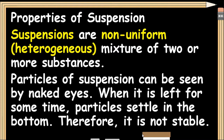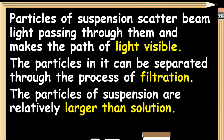Properties of suspension: Suspensions are non-uniform or heterogeneous mixtures of two or more substances. Particles of suspension can be seen by the naked eye. When left for some time, particles settle at the bottom; therefore, it is not stable. Particles of suspension scatter a beam of light passing through it and make the path of light visible. The particles can be separated through the process of filtration, and they are relatively larger than those in a solution.